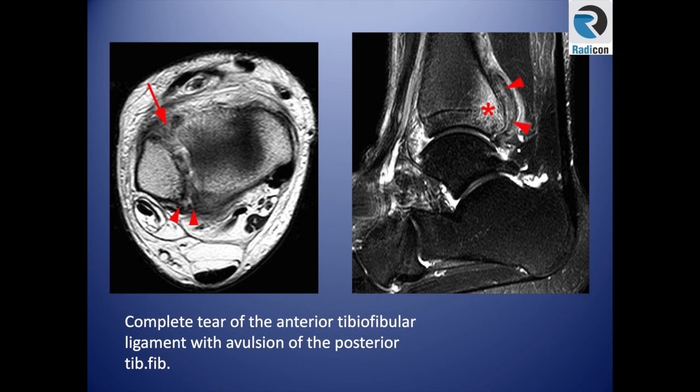Another case shows complete disruption of the anterior and posterior tibiofibular ligaments with thickening and periosteal sleeve elevation of the posterior tibiofibular ligament. If you see a posterior malleolar fracture, it is usually an avulsion fracture of the posterior tibiofibular ligament.